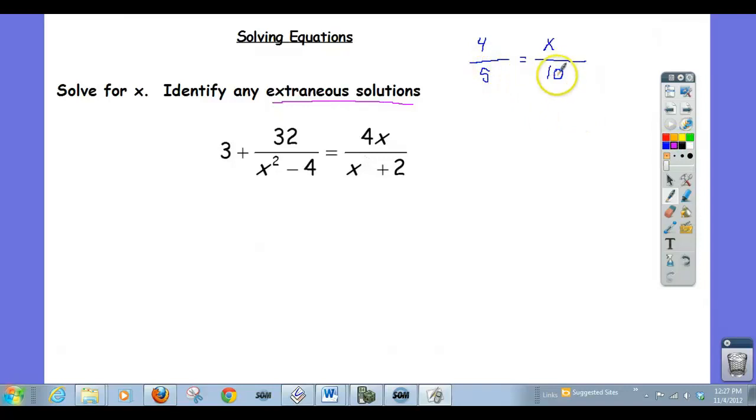So what I mean is, this has a denominator of 10. Is there any way I could turn 4 fifths into a fraction that has a denominator of 10? And I think if you just multiply the top and the bottom by 2, you get 8 over 10 equals x over 10.